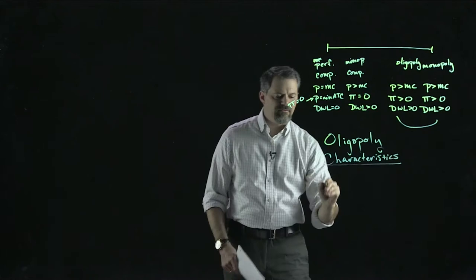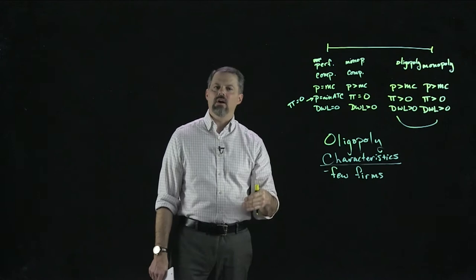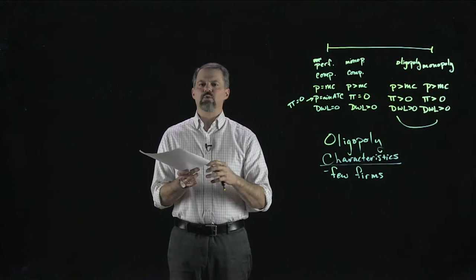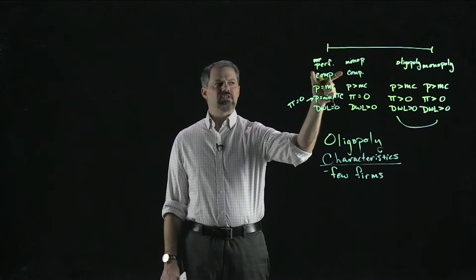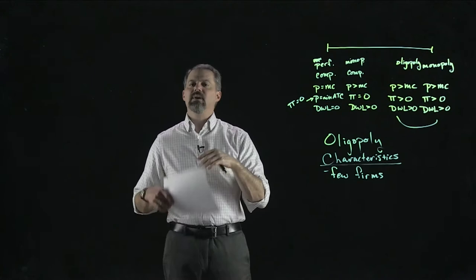The first characteristic is that there are a few firms. We're not going to define exactly what we mean by few — it could be two, it could be five — more than one and not nearly as many as with perfect competition or monopolistic competition. When you have a few firms, each firm has a relatively big impact on the market. With perfect competition firms are small compared to the market; with oligopoly the firms are big compared to the market.